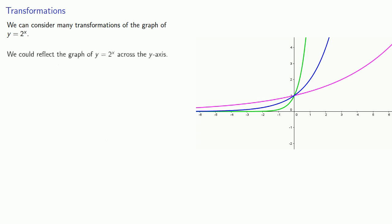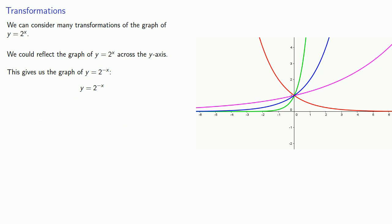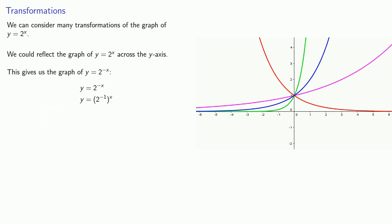We could also reflect the graph of y equals 2 to the x across the y-axis. This gives us the graph of y equals 2 to the power negative x. We can split that exponent as negative 1 times x, and 2 to the power negative 1 is 1/2.